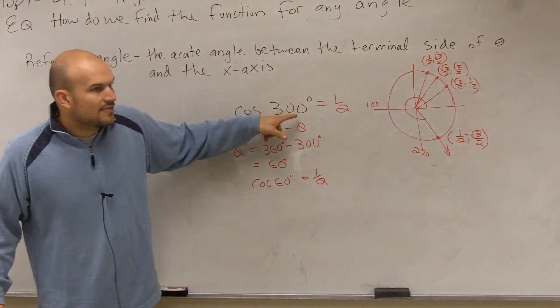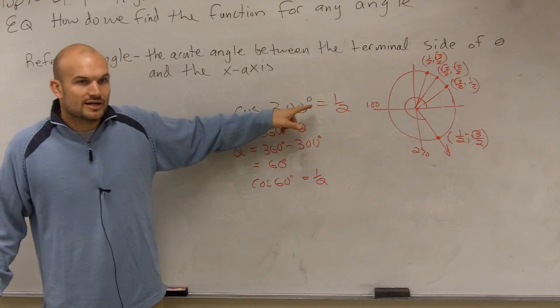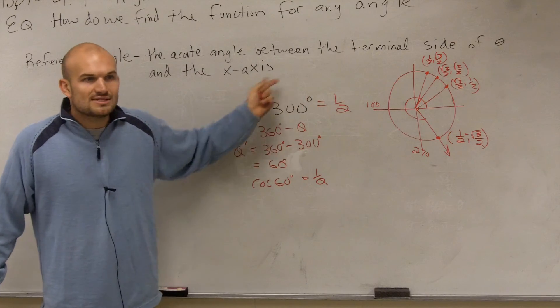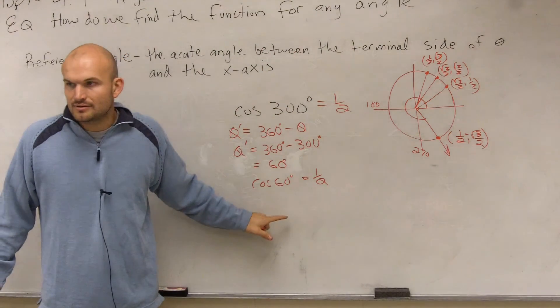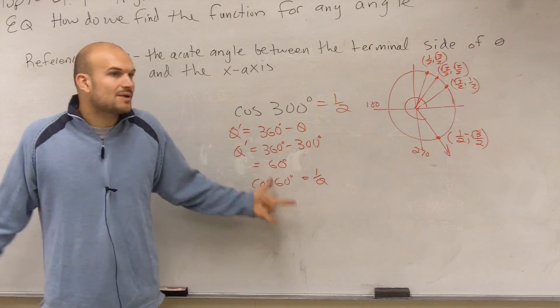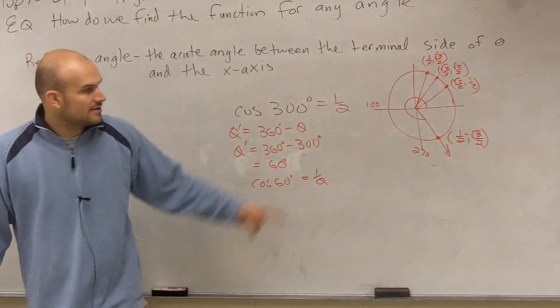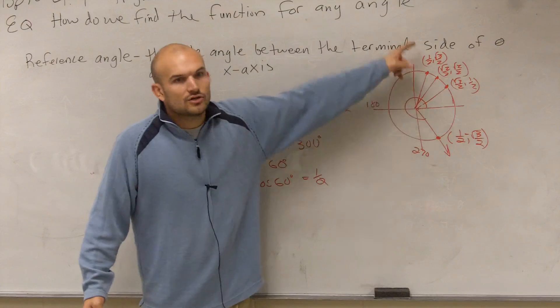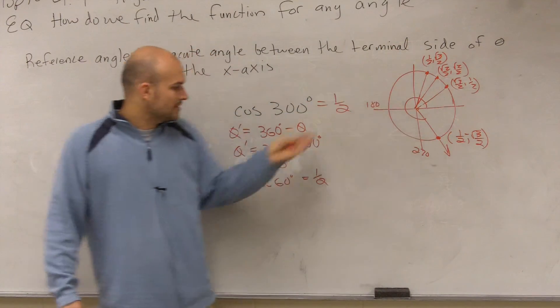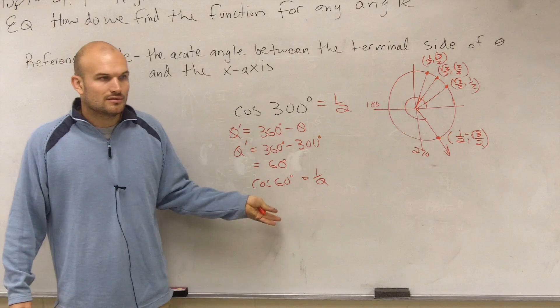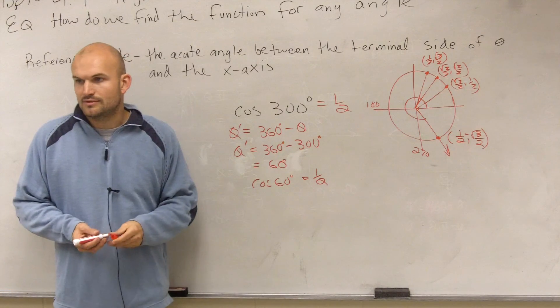So do you guys see that the cosine of 300 is equal, or cosine of theta is equal to the cosine of its reference angle? See that? That's why this is like a shortcut for you guys to do. Rather than having to graph the angle, figure out the coordinate point, where it relates to on the unit circle. Determine the reference angle, and you got the exact same coordinate point.